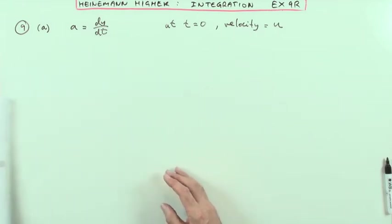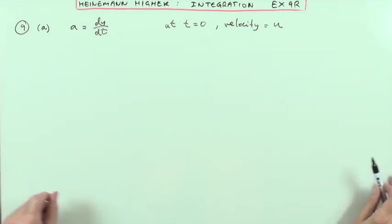Number 9, slightly the difference this time, it's about distances and velocities and acceleration.